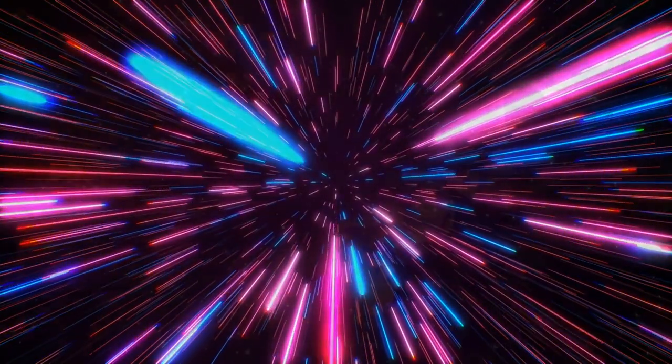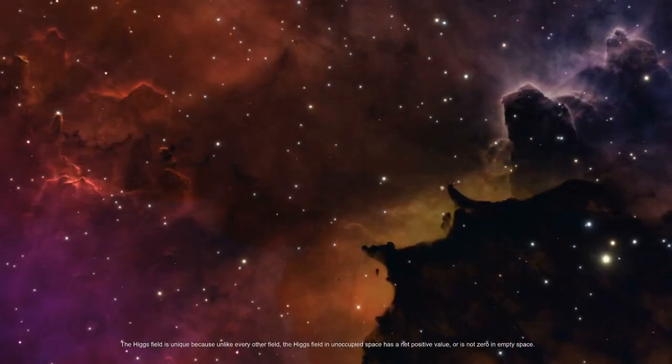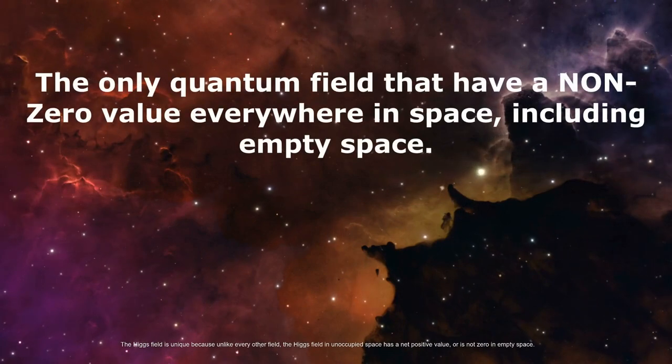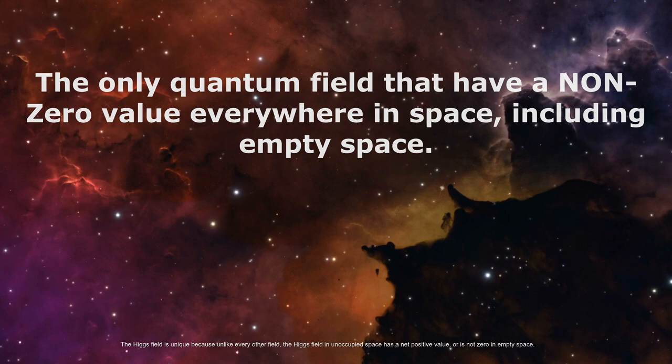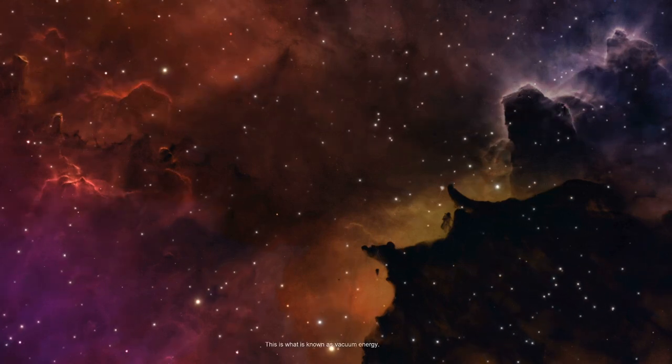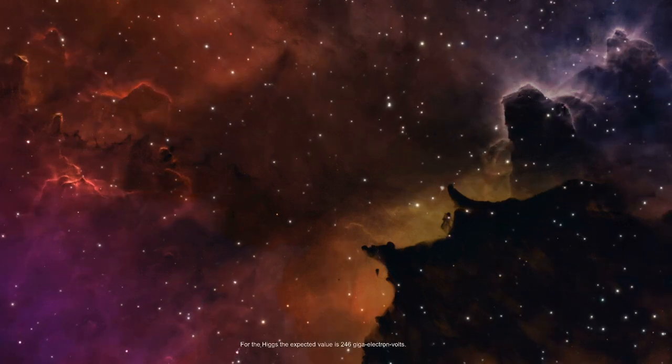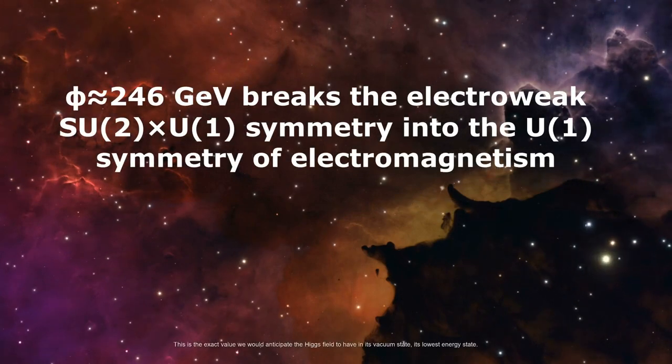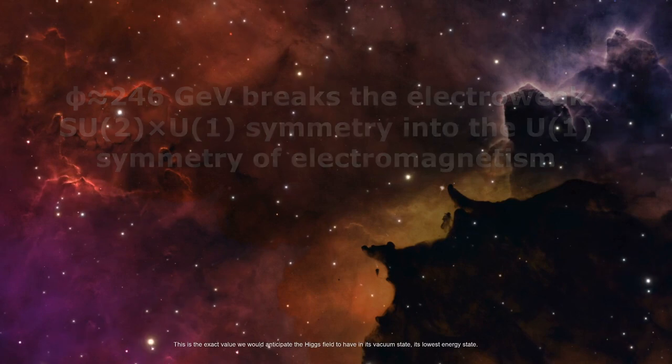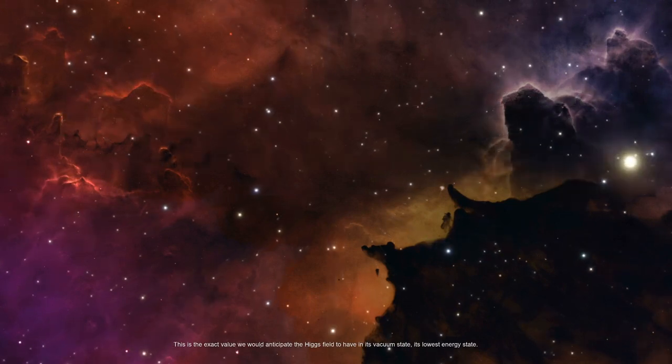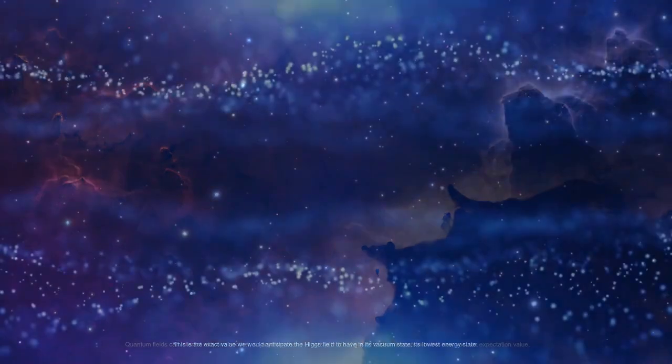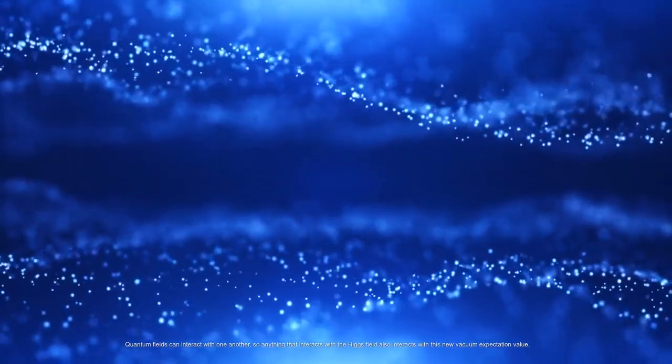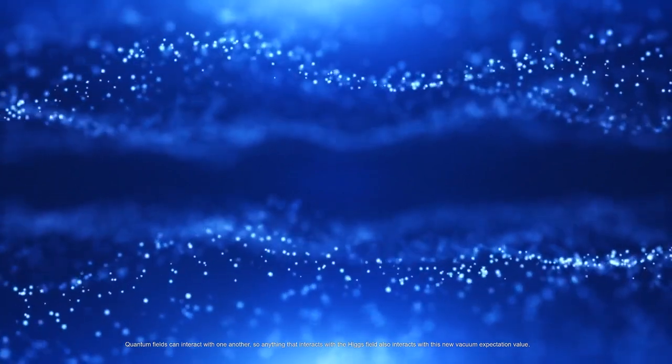The Higgs field is unique because unlike every other field, the Higgs field in unoccupied space has a net positive value or is not zero in empty space. This is what is known as vacuum energy for the Higgs. The expected value is 246 giga electron volts. This is the exact value we would anticipate the Higgs field to have in its vacuum state, its lowest energy state. Quantum fields can interact with one another, so anything that interacts with the Higgs field also interacts with this new vacuum expectation value.